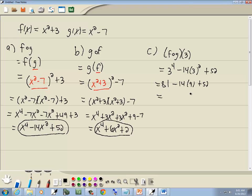81 plus 52 is 133 minus, let's see, 36, 3, 9, 126, which gives us 7.